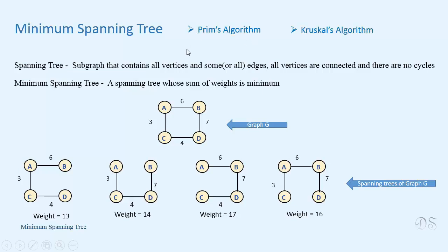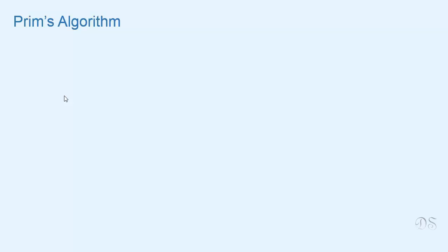In this course, we will learn about these two algorithms for finding minimum spanning tree of a graph. Both of these algorithms use the greedy approach. In this video, we will learn about Prim's algorithm which is used for creating a minimum spanning tree. The procedure of Prim's algorithm is somewhat like that of Dijkstra's algorithm.